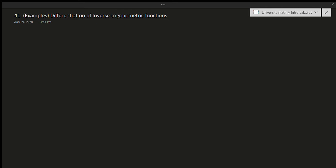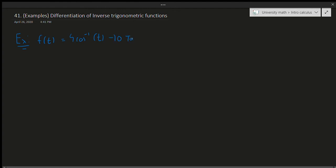Hello and welcome to this video. In this short video I'll be doing three easy examples of the differentiation of inverse trigonometric functions. So without any further ado let's get right to it. The first example: suppose f(t) is equal to 4 times cosine inverse of t, or arccos, minus 10 times tan inverse of t, or arctan — it's the same thing.